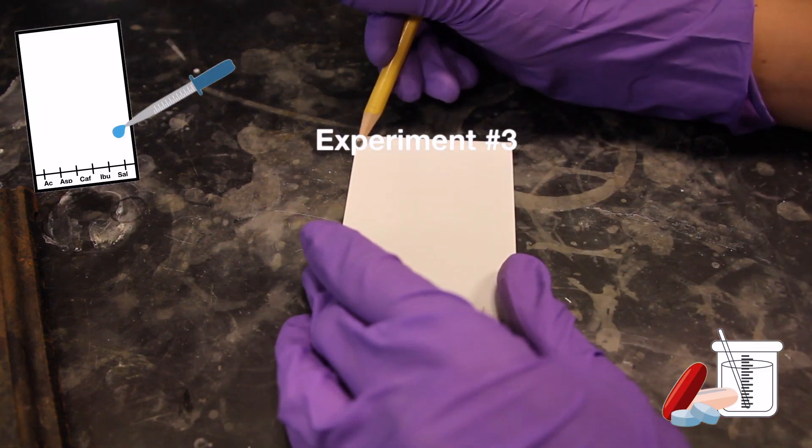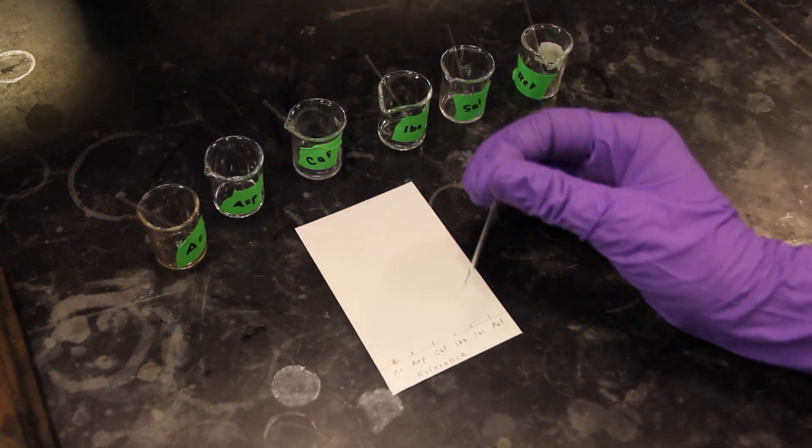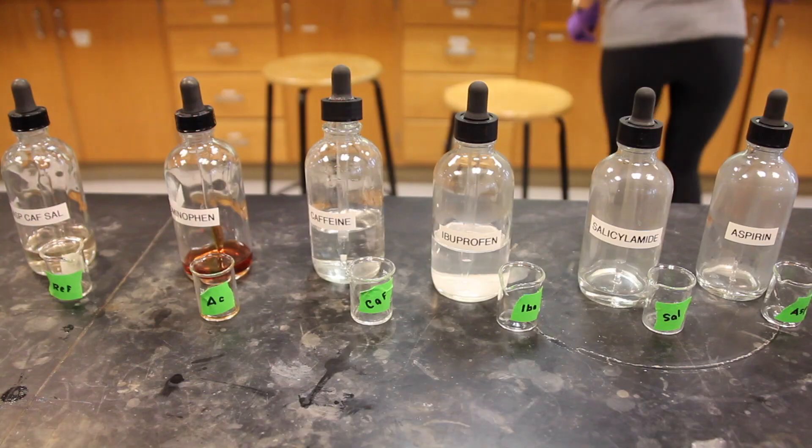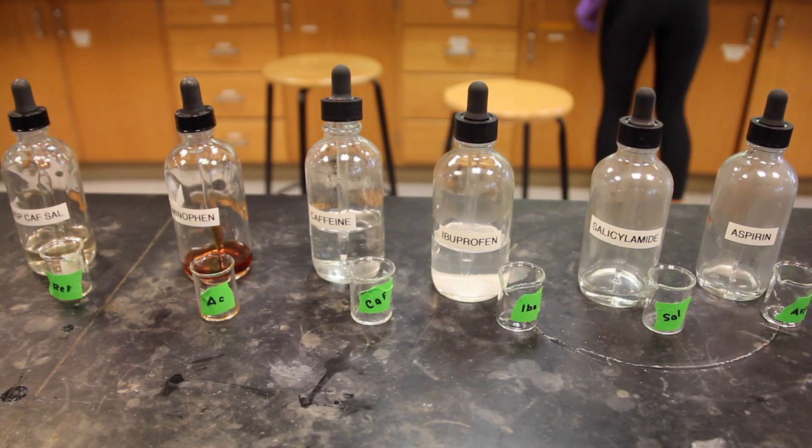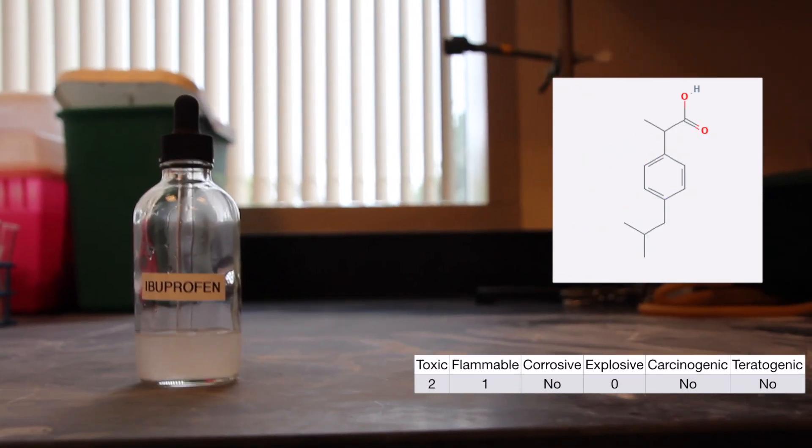In this experiment, you will use thin layer chromatography, or TLC, to analyze the components of some common over-the-counter pain relievers. The compounds that have been chosen for this analysis are acetaminophen, aspirin, caffeine, ibuprofen, and salicylamide.